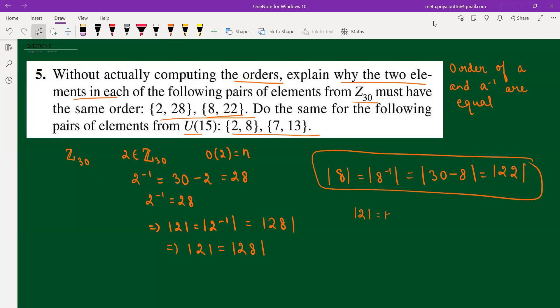Suppose order of 2 is k in U15. Now if you see, the inverse of 2 is 8. Why? Because 8 times 2 is equal to 16, which is congruent to 1 mod 15. So from here you can say that 2 inverse is equals to 8.